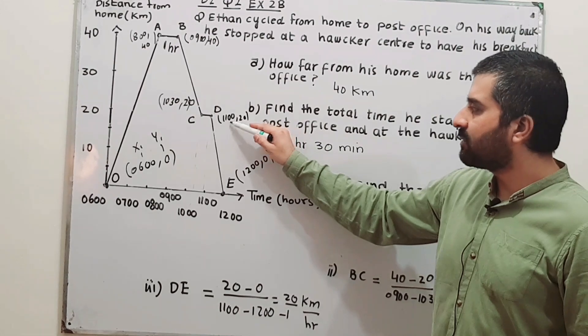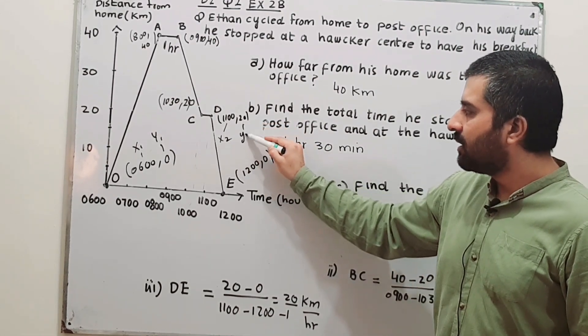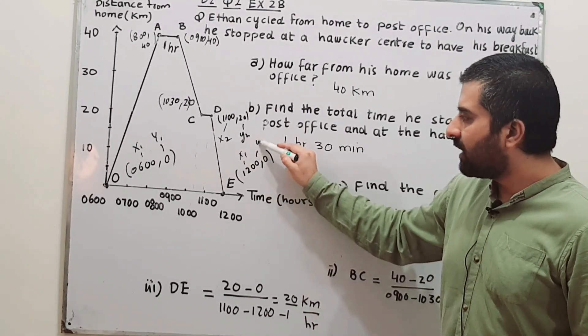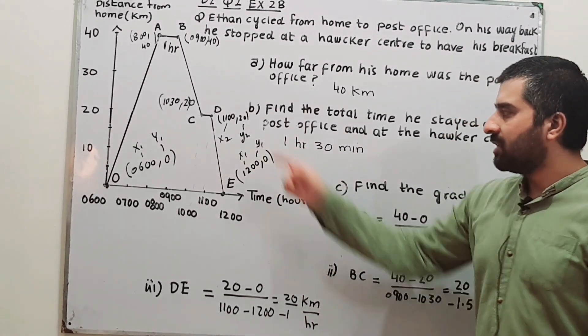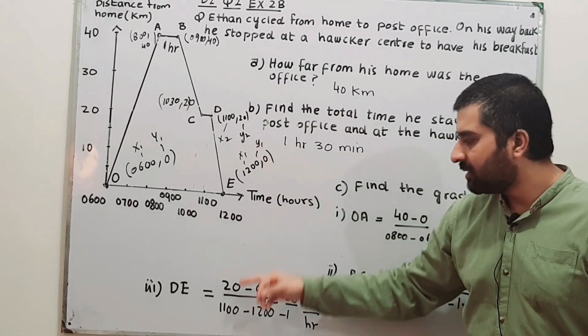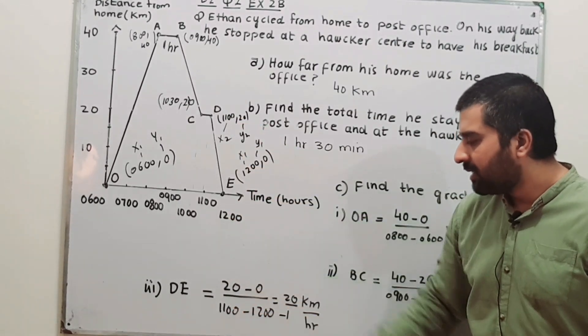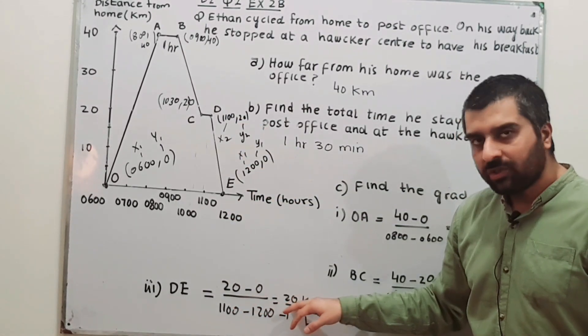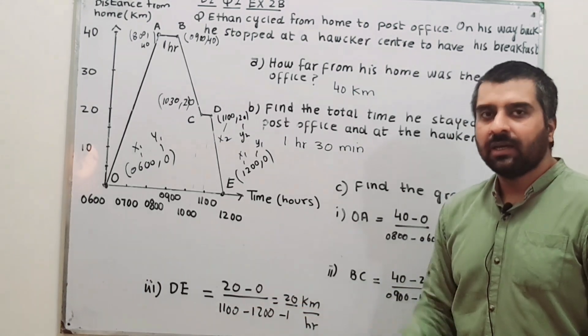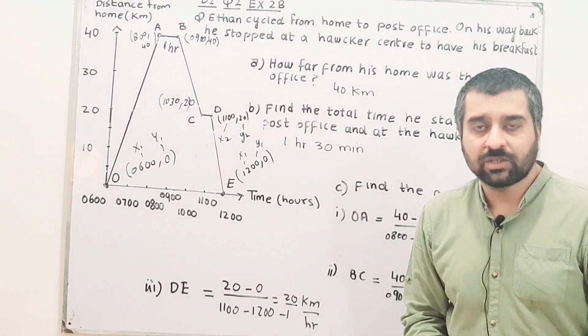So if this is x2, then this is y2. If this is x1, this is y1. Change in y: y2 minus y1, 20 minus 0, divided by change in x: 11 minus 12. So 20 minus 0 is 20, 11 minus 12 is minus 1, so answer will be minus 20. And again, this gradient shows his speed in kilometers per hour.